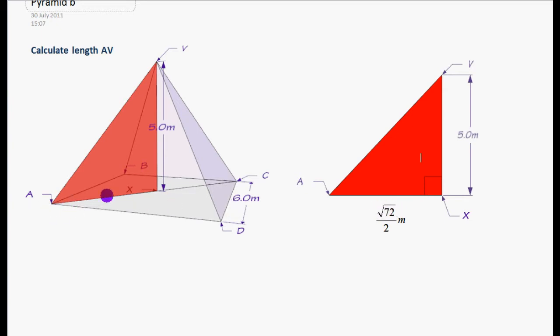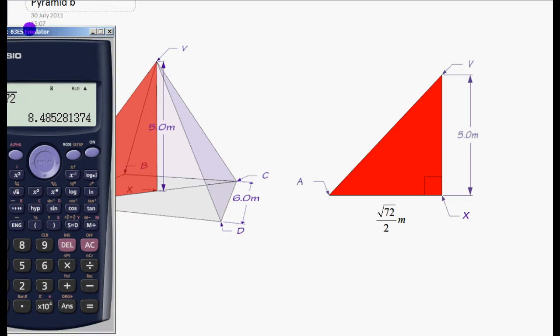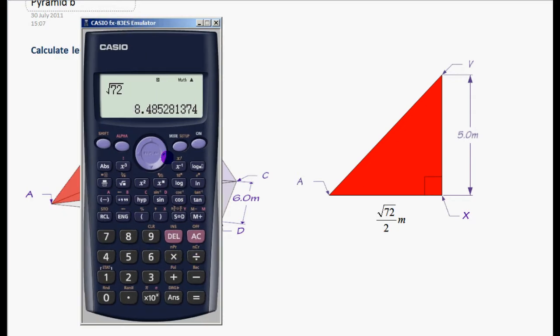So if AC is square root of 72, then AX, this point here, is going to be the midpoint of that. So therefore we're going to have the square root of 72 divided by 2. So I'm going to be using the square root of 72, which was that value, divided by 2 as my base.